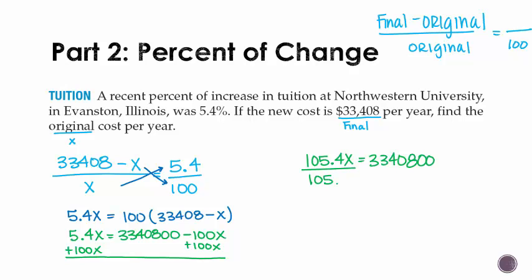When we divide, we've got to throw this number into our calculator. So 33,408 to 0,0 divided by 105.4. I get 31,696.39.